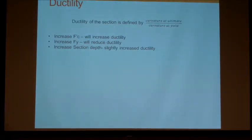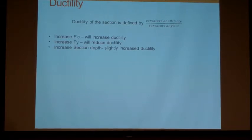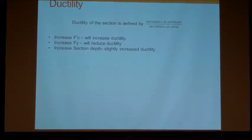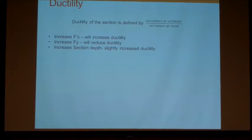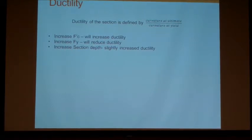Let's see. How does ductility break into all this? Well, the ductility of this section is ultimately defined by the curvature of the ultimate divided by the curvature of the yield. There's different things that we can do. Some of the things, if you increase your F prime C, your ductility is going to increase. Same with your FY, it will actually reduce the ductility. And if you increase your section depth, it will only slightly increase the ductility. If you really increase your section depth, which you don't want too big of a beam, then it will start to have more effect. But typically, if we're increasing our section depth, we're not going to do it by a whole lot, so therefore it's not going to have that much of an effect throughout the structure.